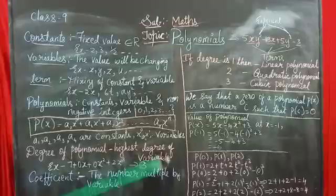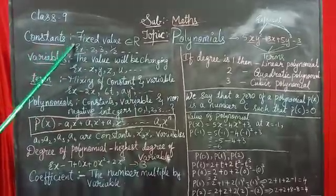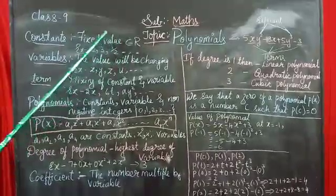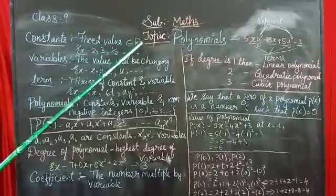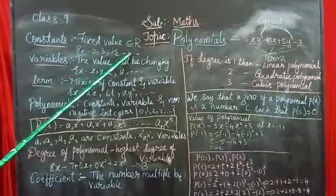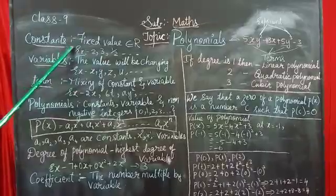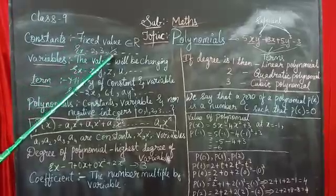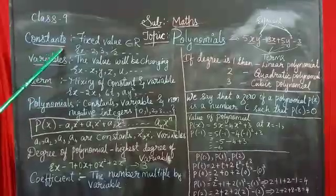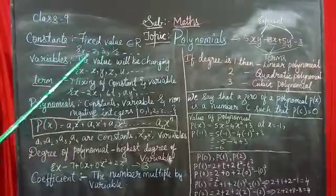What are the basics? The first is the constant. The meaning of constant is nothing but a fixed value belonging to real numbers. For example, 2, 3, half, etc. The value will not change. It can be ABC also — ABC can be constants — but the main thing is it should be a fixed value.